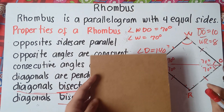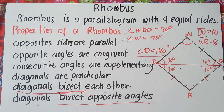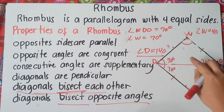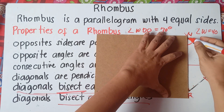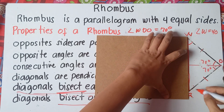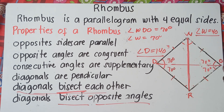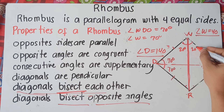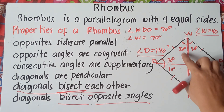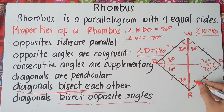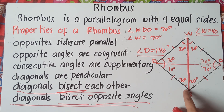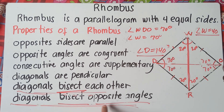If we draw a diagonal from W to R and angle W is 40 degrees, we cut the opposite angle into half — so each half becomes 20 degrees. The opposite angles for this diagonal are also equal at 20 degrees each. That's the last property of a rhombus: diagonals bisect opposite angles, cutting them into two equal parts.